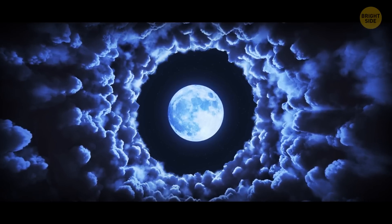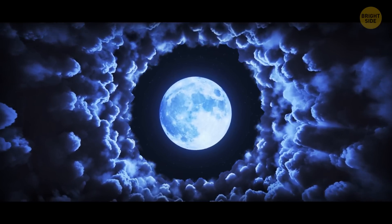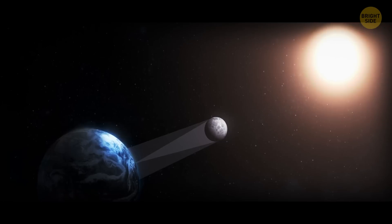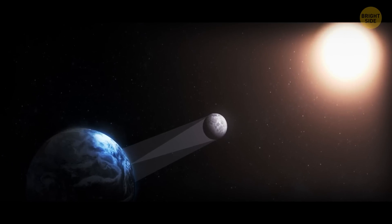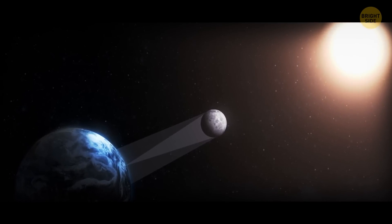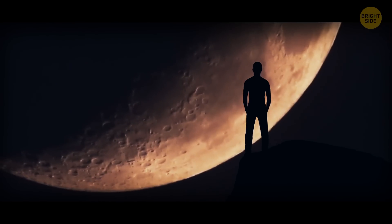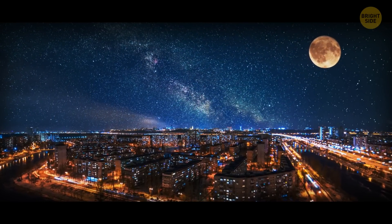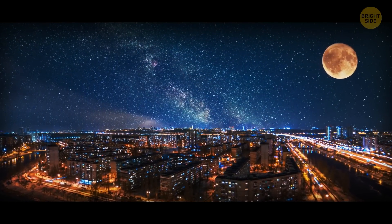The closer the moon is to the horizon, the larger it looks. This phenomenon is called the moon illusion. One of the theories explaining it claims that the atmosphere plays the role of a magnifying glass, which makes the moon look bigger. In reality, if the atmosphere had a say in it, the moon would actually look smaller, not bigger.